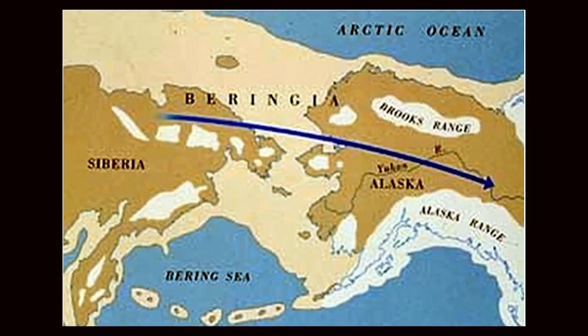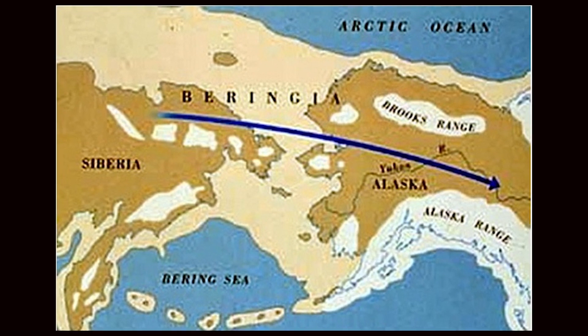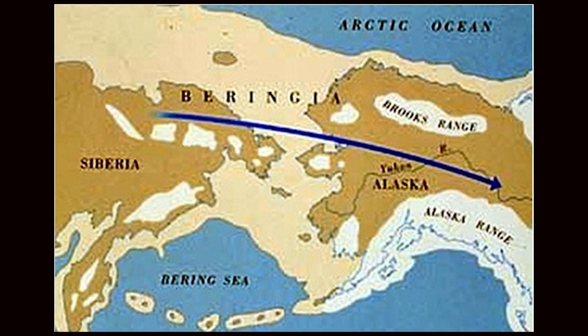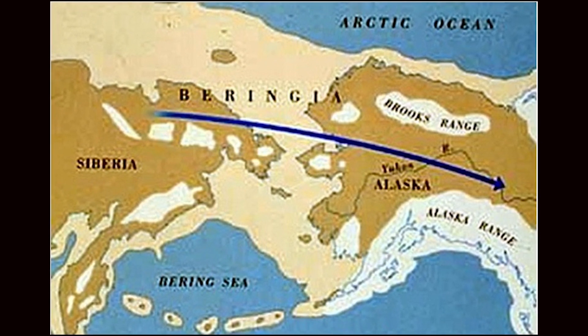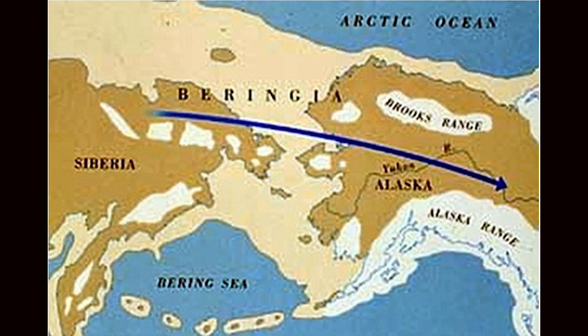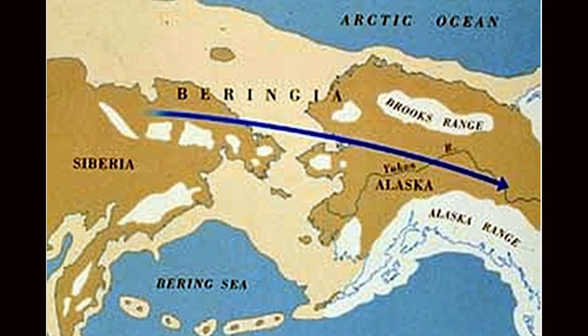We know they migrated to America through the Bering Strait. Thousands of years ago, the Bering Strait and its surroundings were covered with ice — it was like a land bridge, possible to cross even on foot. Experts gave that region a special name: Beringia. They thought of it as a country and gave it this name, as you can see on this map.